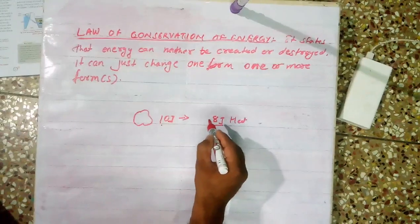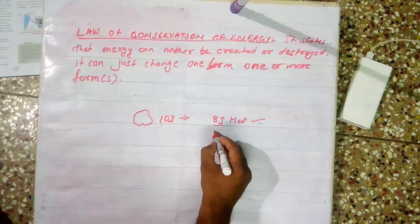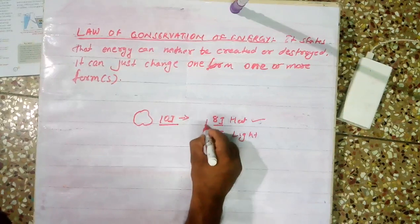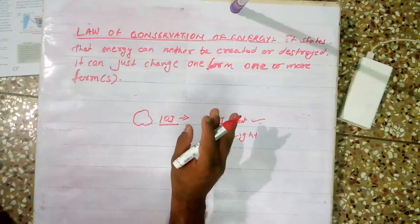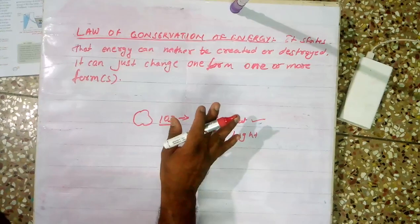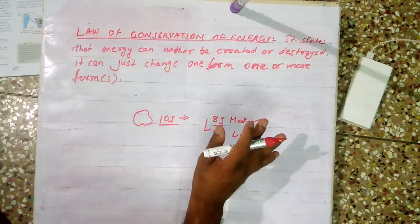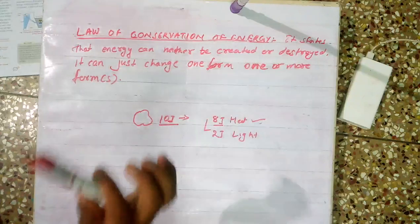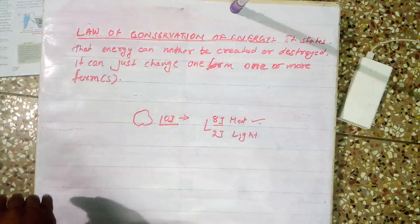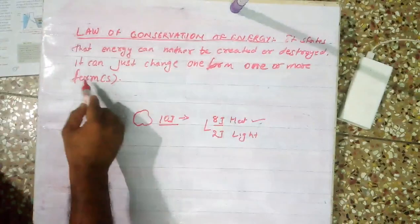But only 8 joules of heat was released. Then where did the 2 joules of energy go? During the burning, we get heat as well as light. So 2 joules of light energy produced means total energy in the coal was released. There is no loss of energy, no destruction, and at the same time no creation of energy. The law of conservation of energy states that energy can neither be created nor be destroyed. We can just change the form of energy — from one form to another form, or one form to many forms.